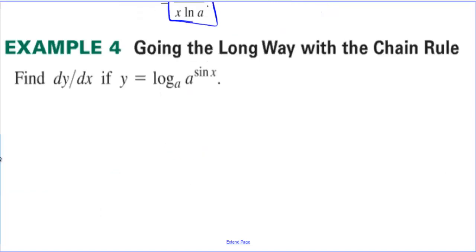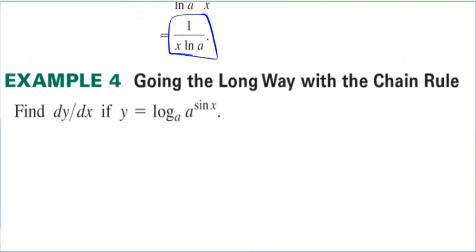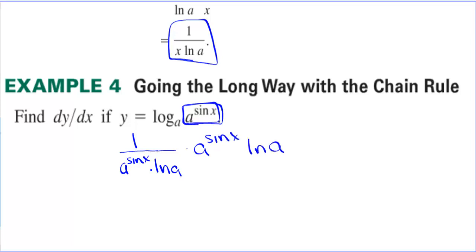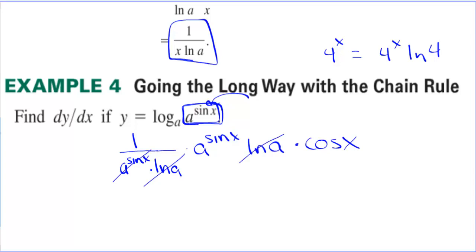Going the long way with the chain rule: taking the derivative of log base a of sine x, it's 1 over a sine of x times the natural log of a, times the derivative of the inside — which is a sine of x times natural log of a — times cosine of x. The natural log of a cancels and a to the sine x cancels, leaving cosine of x as the final answer. This is analogous to how the derivative of 4 to the x is 4 to the x times natural log of 4.